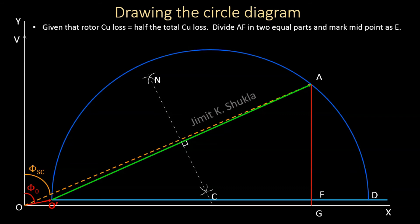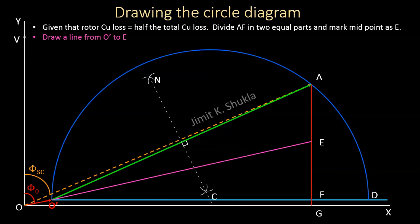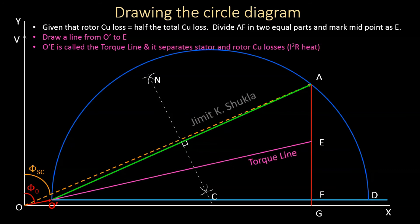Since rotor copper loss equals half the total copper loss, we divide AF into two equal parts and mark the midpoint as E. A line drawn from O' to E is called the torque line, which separates stator copper losses and rotor copper losses. The line O'A is called the output line.